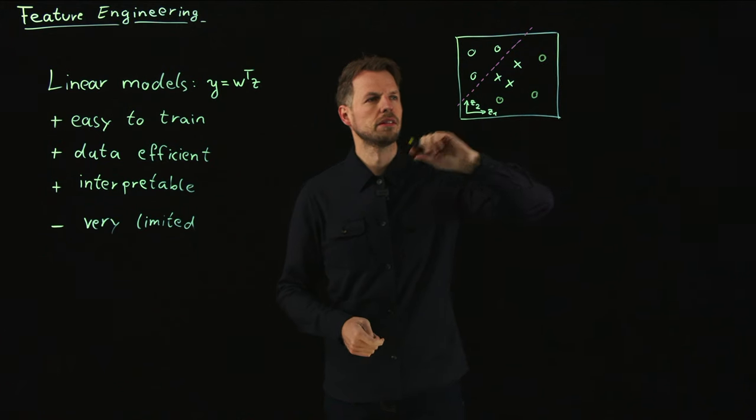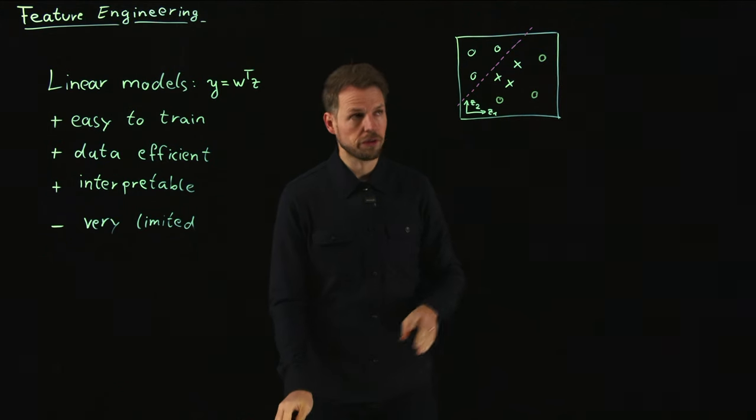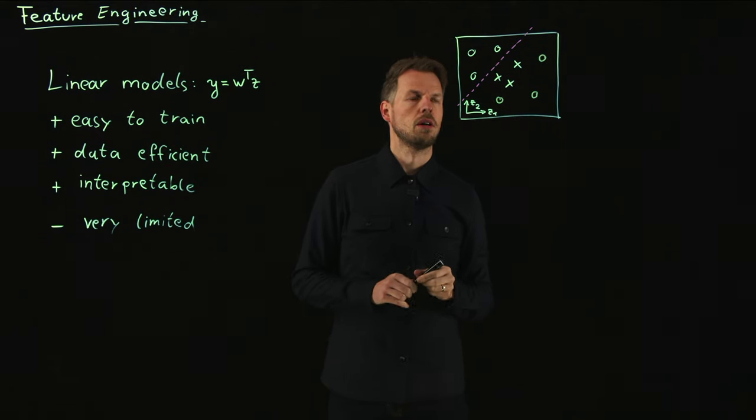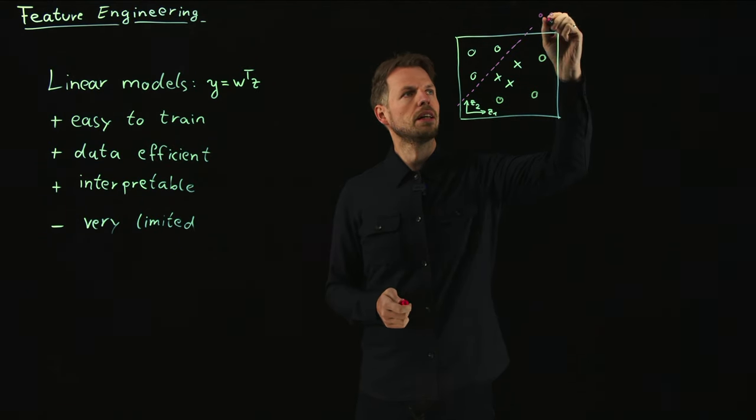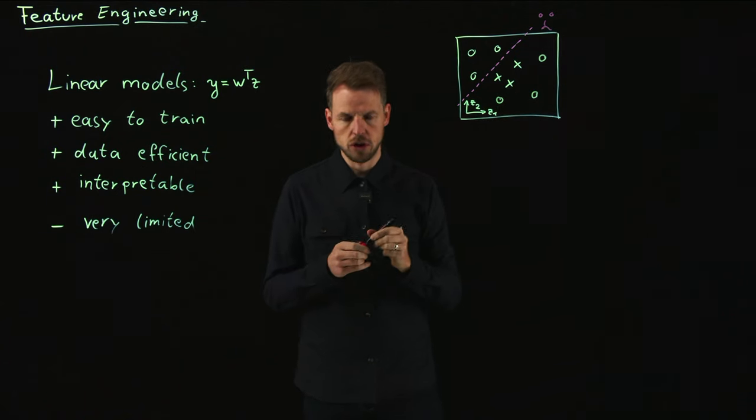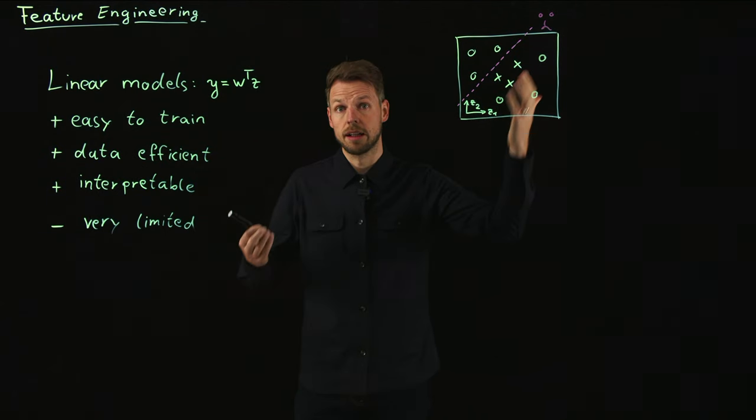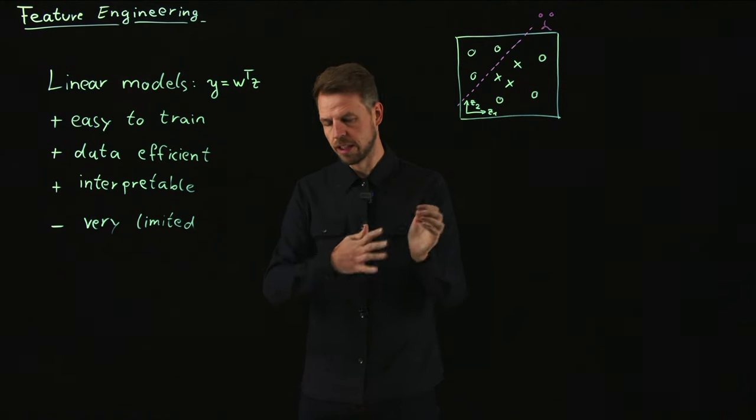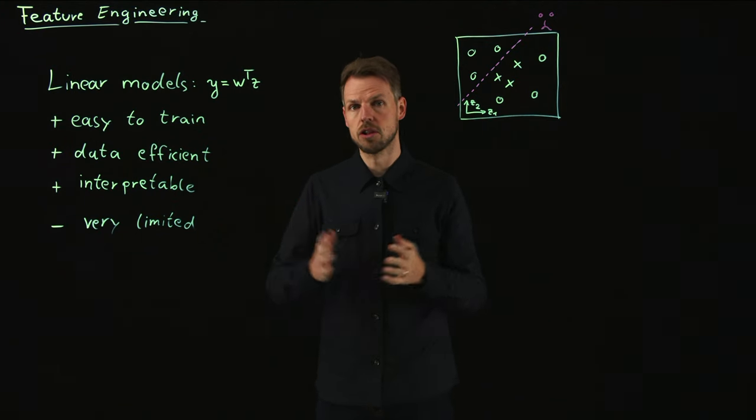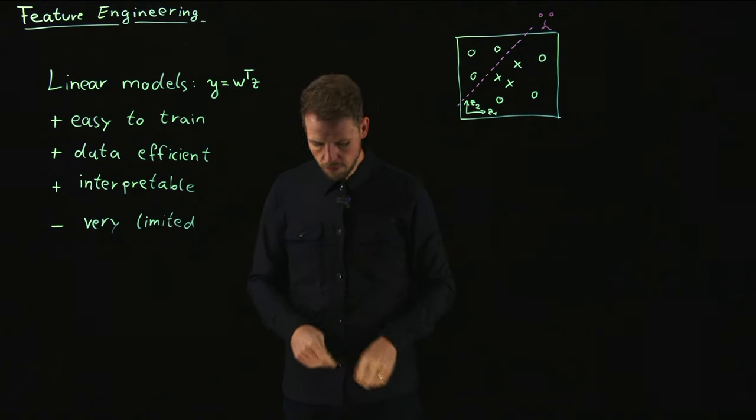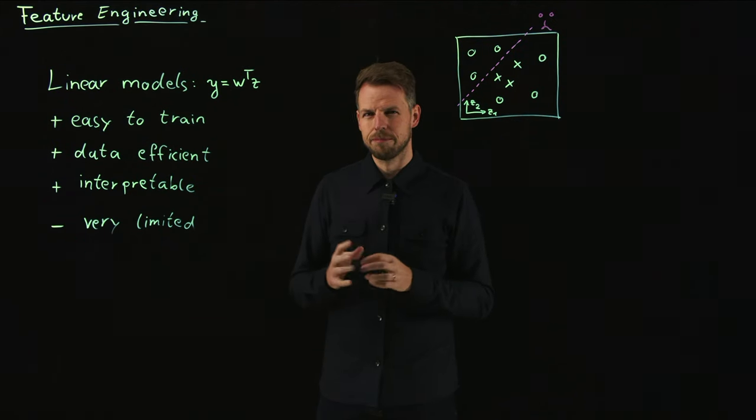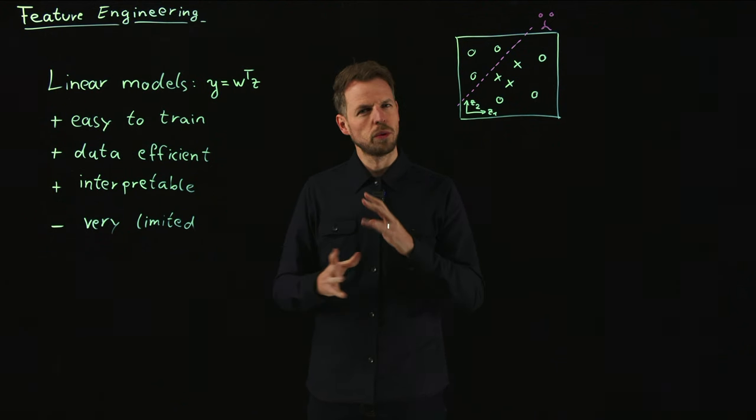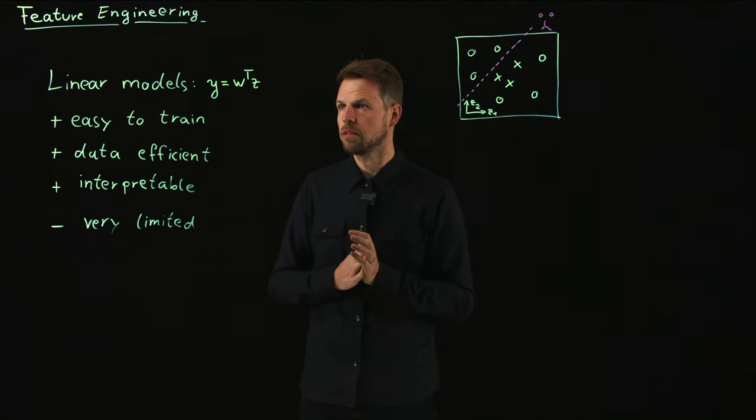But this is limiting because oftentimes what we will have is relations like this. Maybe you will find additional points of the positive class, the circles, around this. So that a linear model is clearly not sufficient. Do we need to go to nonlinear models or can we do something else?